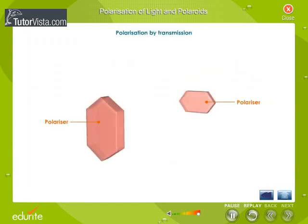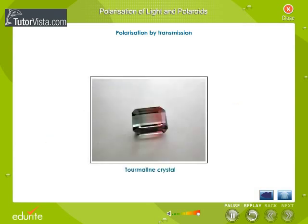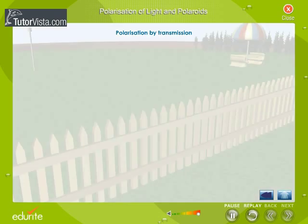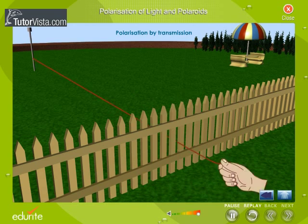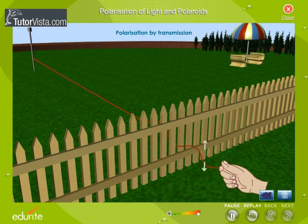Polarization by transmission. The most common method of polarization involves the use of a polarizer. Polarizers are made of a special material which is capable of blocking one of the two planes of vibration of an electromagnetic wave. Tourmaline crystal is a polarizer. Let us understand what polarization is with the help of an example.